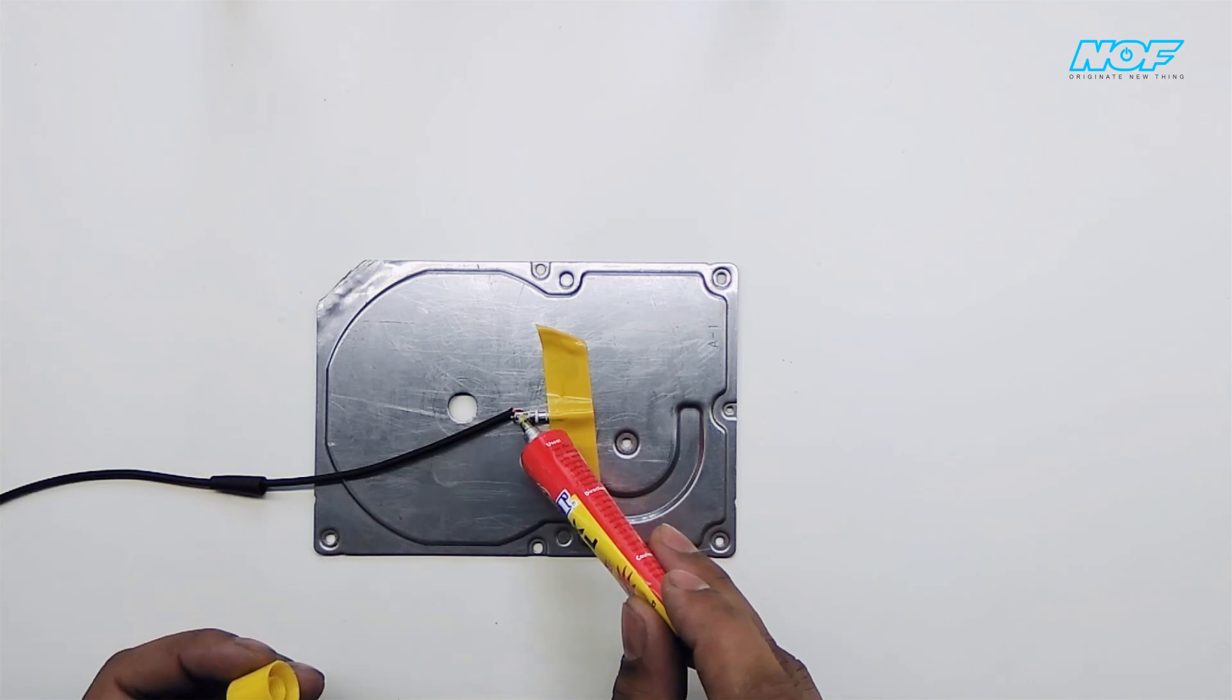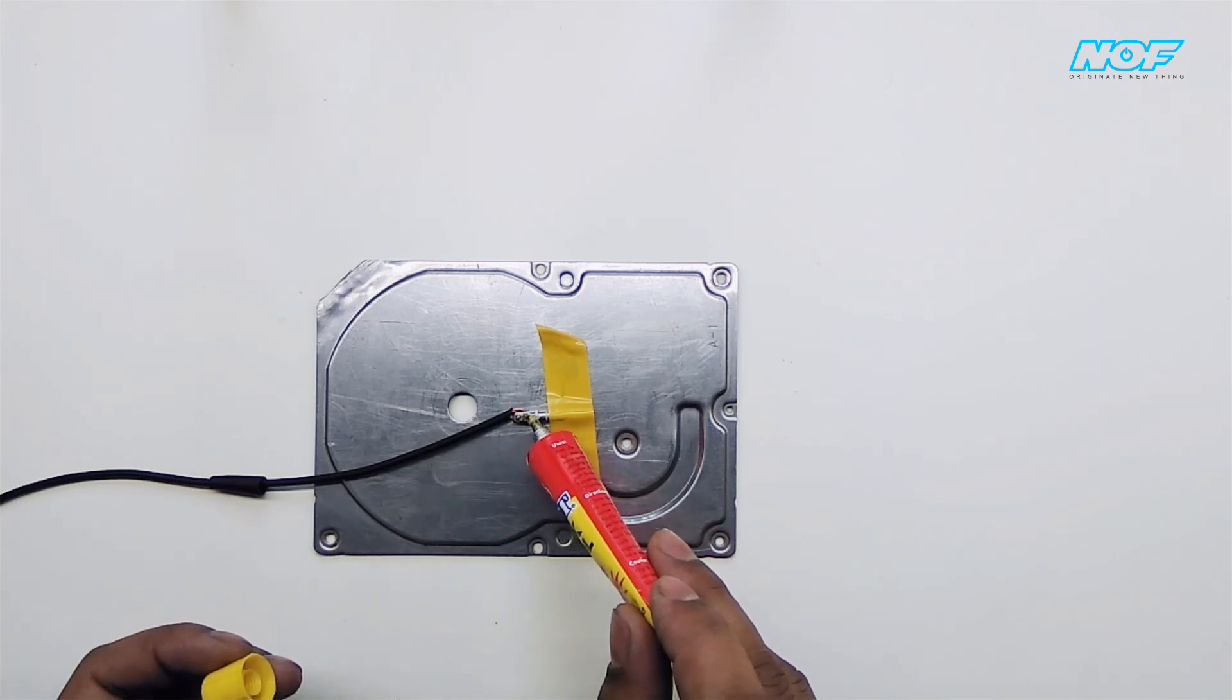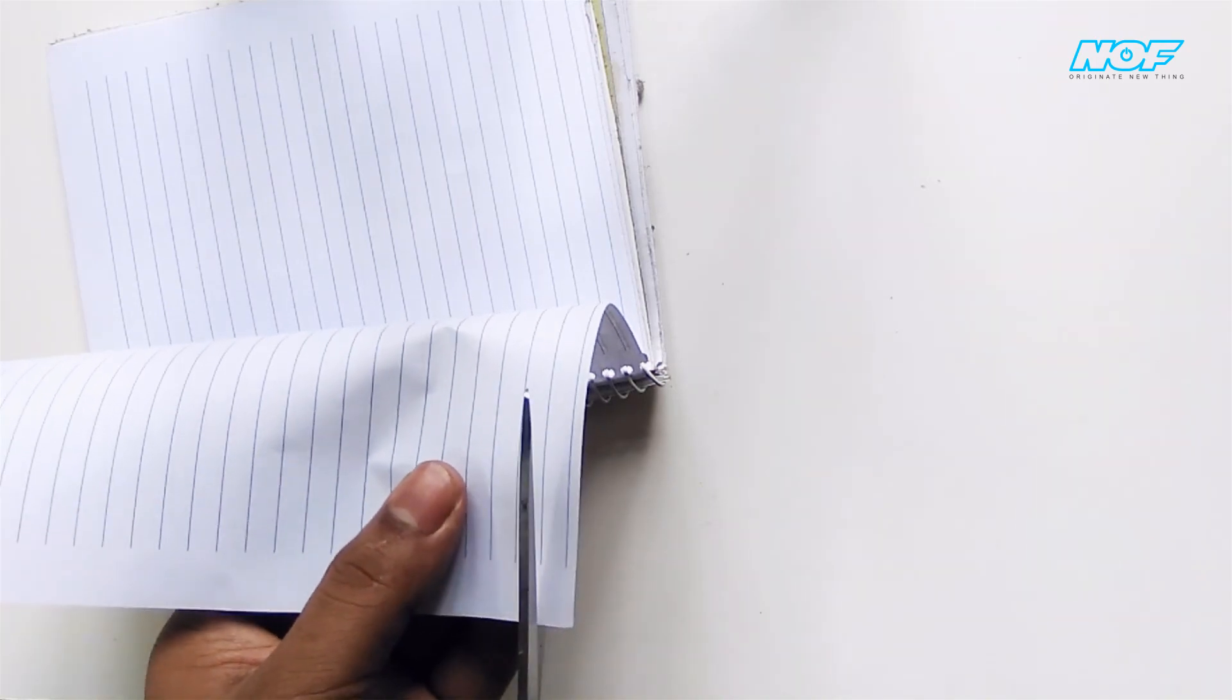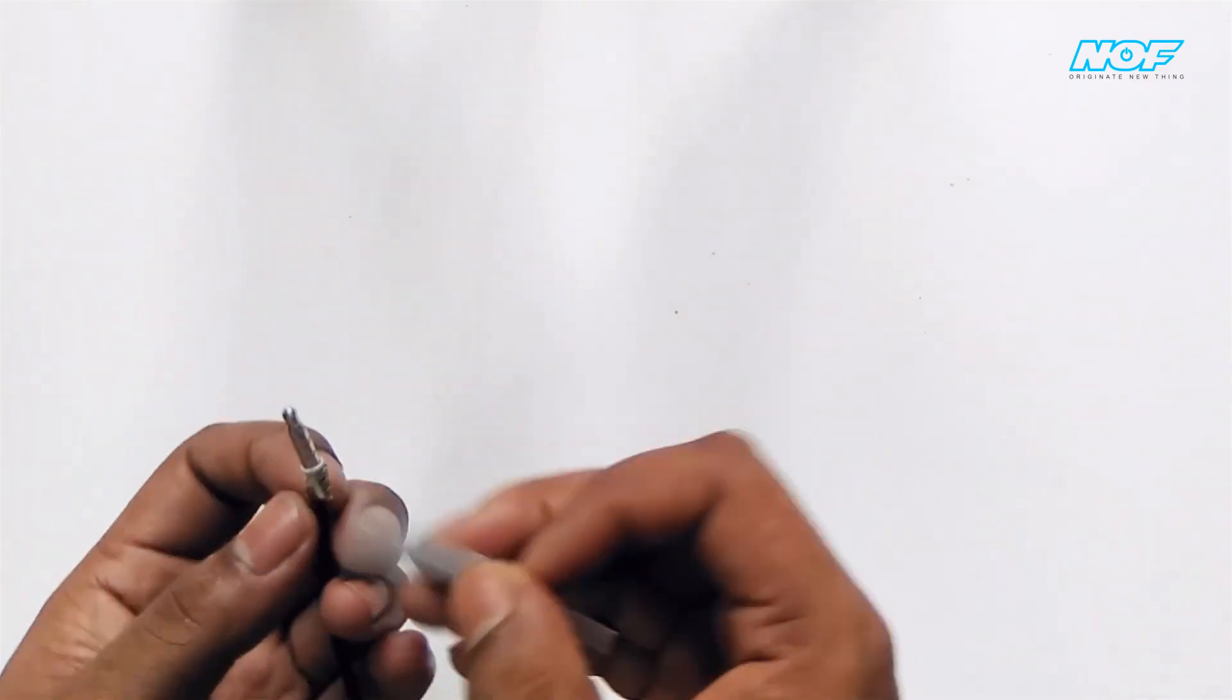Now I applied leather glue here. Then I cut a small piece of paper for covering the area of the jack.